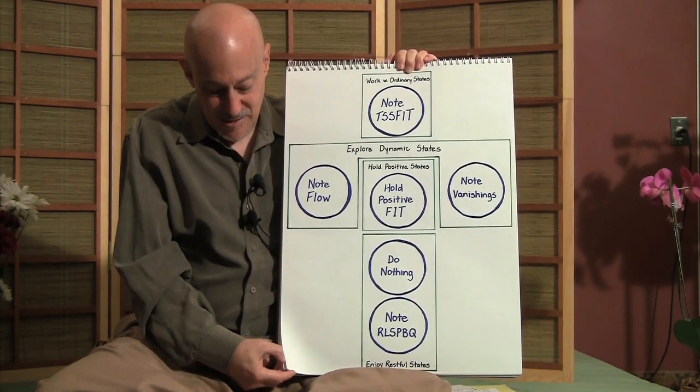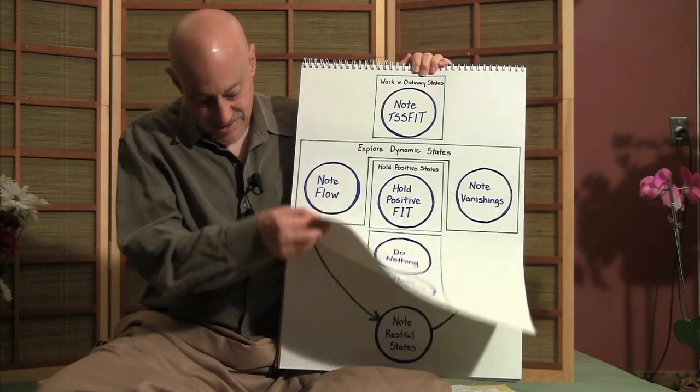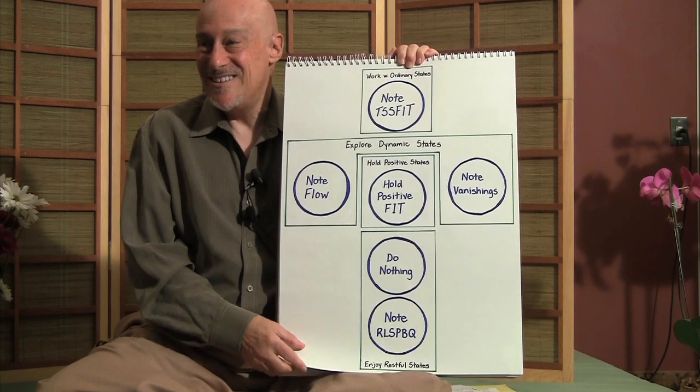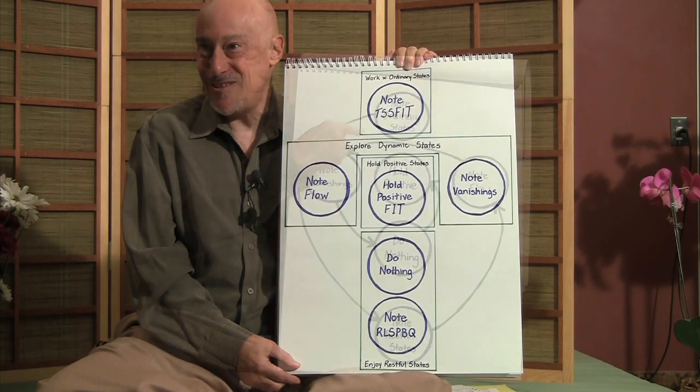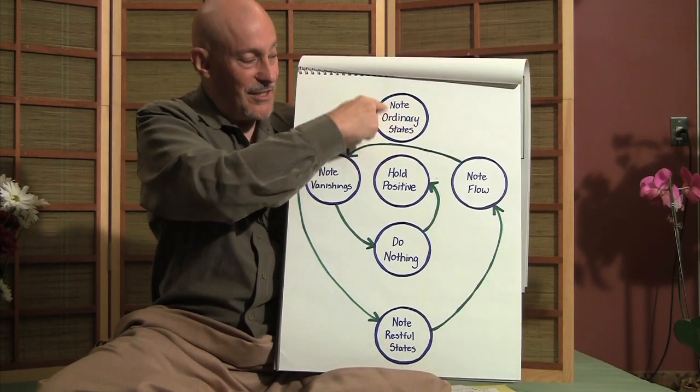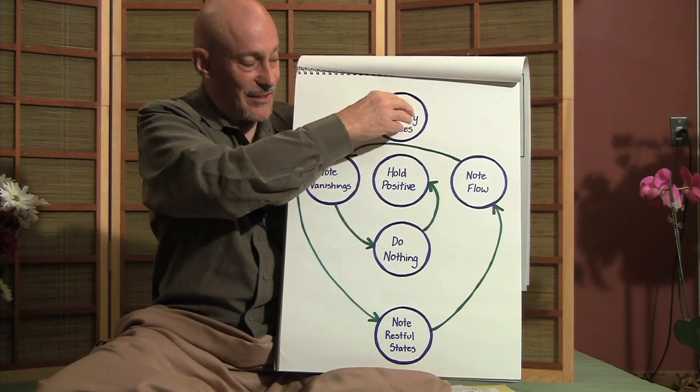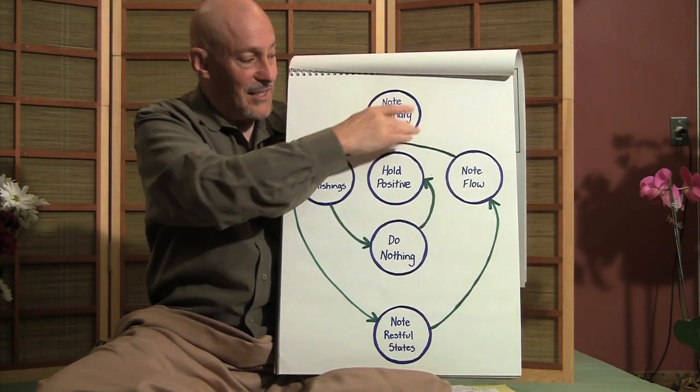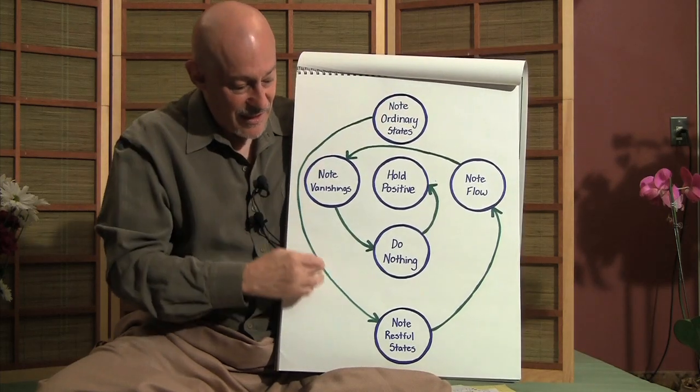Those of you that were in the PM group process today, I gave you the full psycho-spiritual nautilus cycle. We started by noting ordinary states, sort of like, okay, we start at the coarse level of ordinary experience, untangle.